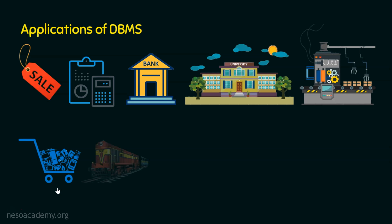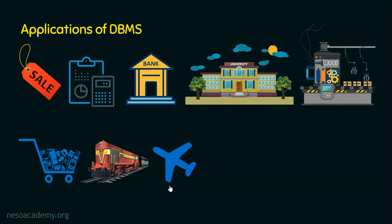Coming to the next application area, which is railway reservation. Railways need to maintain PNR information, passenger name record information, customer and passenger information, train schedules, reservation information, HR information, accounting information, and route and alternate route details. So railways are also an application of database management systems.